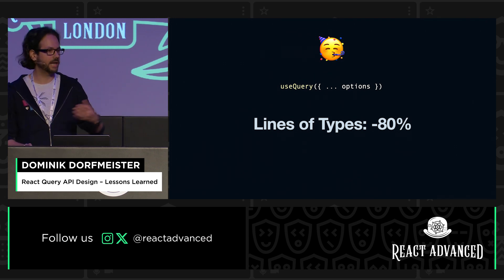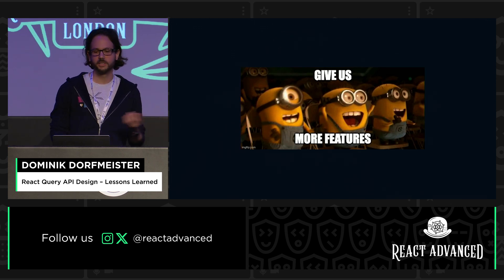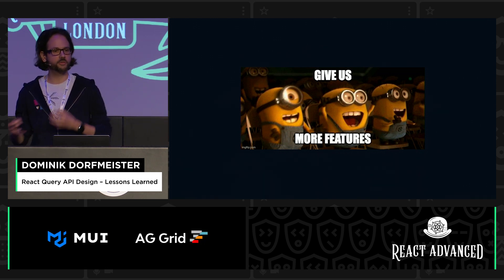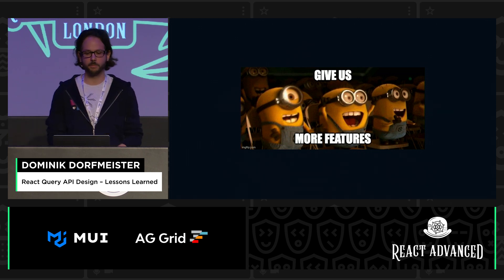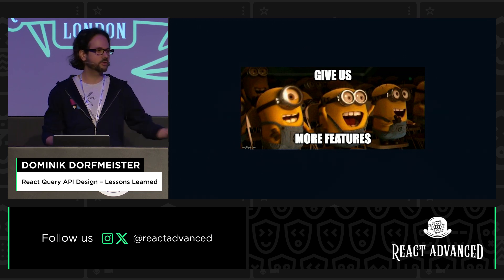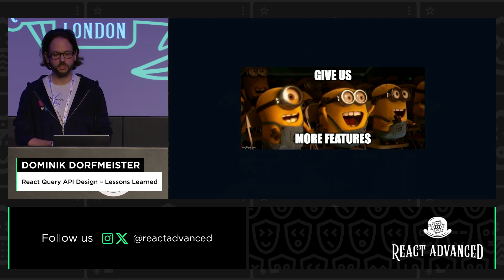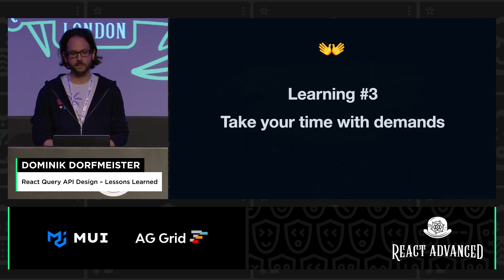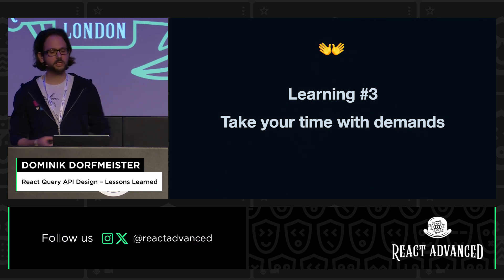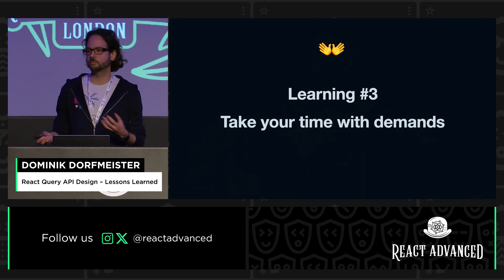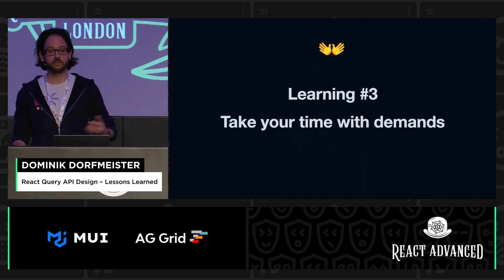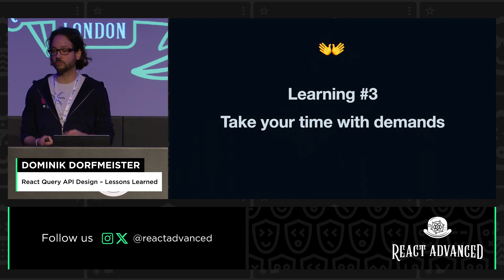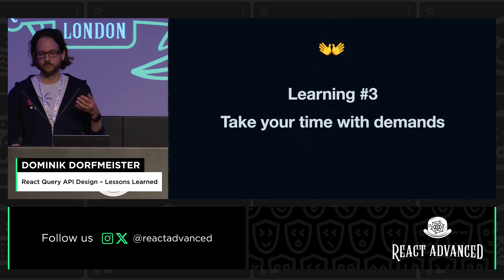One thing that comes up when a library gets popular is that users want more features. And managing a demanding user base is one of the more tricky things in open source — on one hand, you really want to implement the features that users are suggesting and help them fix their problems. But on the other hand, if you just add every feature request that comes in, the API becomes bloated and the library becomes unfocused. That might reduce adoption again for newcomers because they get confused. My advice here would be to take your time before you add anything to a library. In the relationship between user and maintainer, it's the user's job to tell you about the deadlines and use cases. But it's the maintainer's job to keep the bigger picture in mind — will this API also work for other users and cases the original reporter hasn't even thought about? Because once we add an API, we can't really change it easily without a new major version.